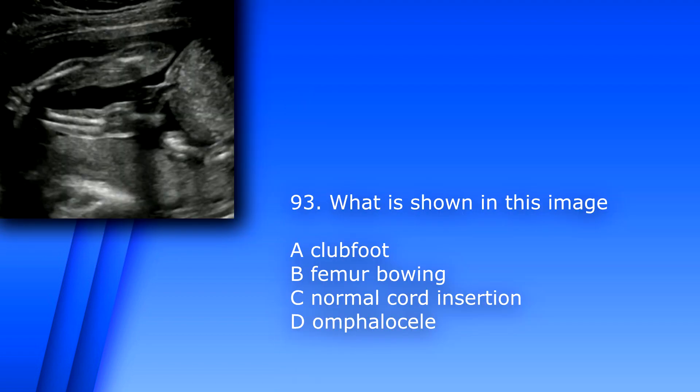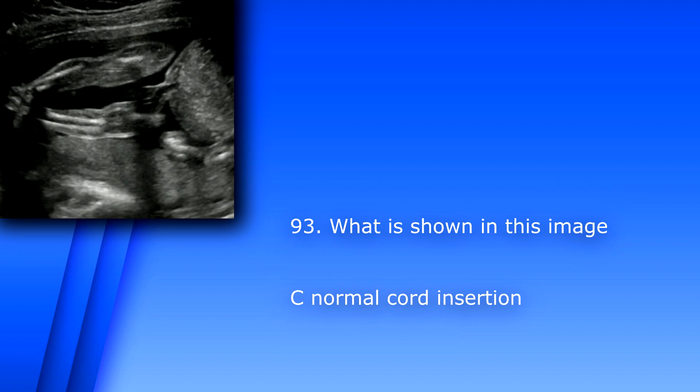Question 93. What is shown in this image? A. Club foot. B. Femur bowing. C. Normal cord insertion. D. Omphalocele. The answer is C, normal cord insertion.